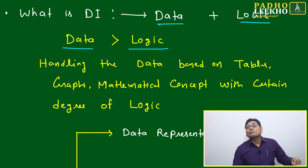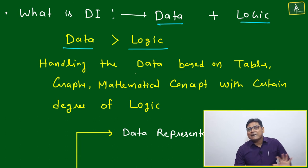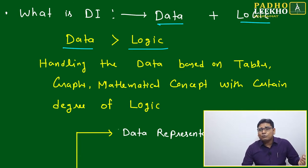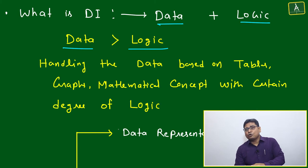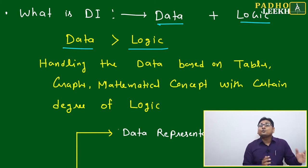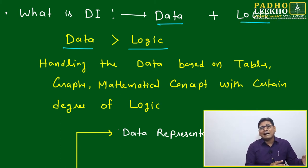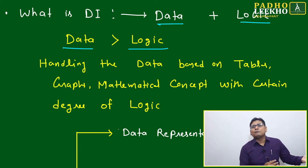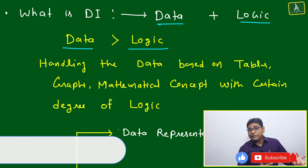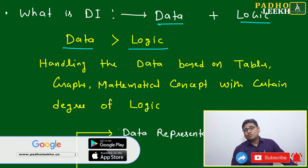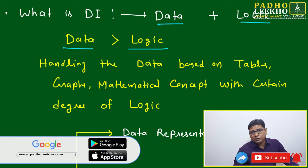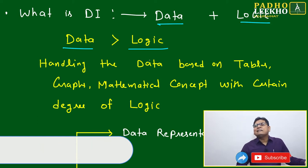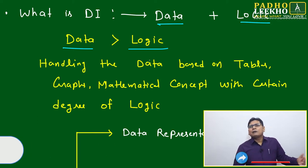We need to understand how many types of data representation exist, and for each type, which mathematical concept is used to solve or compare the data. Data may be given as a bar graph, pie diagram, table format, histogram, or other formats. Data handling is one of the most important skills in this era of data science.